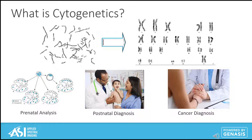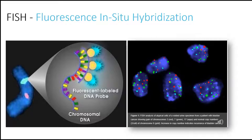Cytogenetics is the study of human chromosomes in health and disease. These techniques are important tools in prenatal analysis, postnatal diagnosis, and cancer diagnosis. FISH, or fluorescence in situ hybridization, is a molecular technique that uses fluorescent probes that bind to specific parts of the chromosome, used to detect and localize the presence or absence of specific DNA sequences. FISH analysis can be performed on non-dividing cells obtained from blood, bone marrow, and tissue sections. As one expert describes it: FISH is a specific answer to a specific question, whereas cytogenetics is looking at the whole genome.